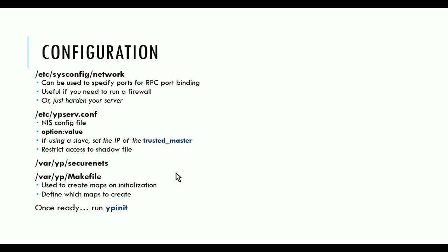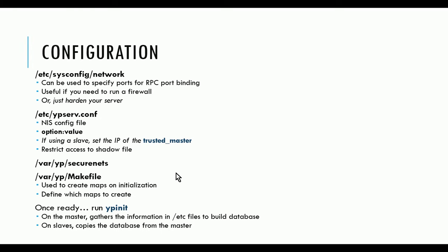Once you define which maps to create in the makefile, you're ready to run the YPinit command. When you run YPinit on the master, it gathers all the information found in those /etc files defined in the makefile and builds the database. On a slave, it copies the database from the master — it goes out to the master, gets the database contents, and replicates it down to itself. Note that in the lab environment, if you're using a 64-bit system and Fedora 15, you'll have to run the command from lib64.